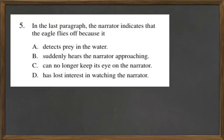Question 5 is simply a comprehension question. In the last paragraph, the narrator indicates that the eagle flies off because it: A. Detects prey in the water, B. Suddenly hears the narrator approaching, C. Can no longer keep its eye on the narrator, or D. Has lost interest in watching the narrator.